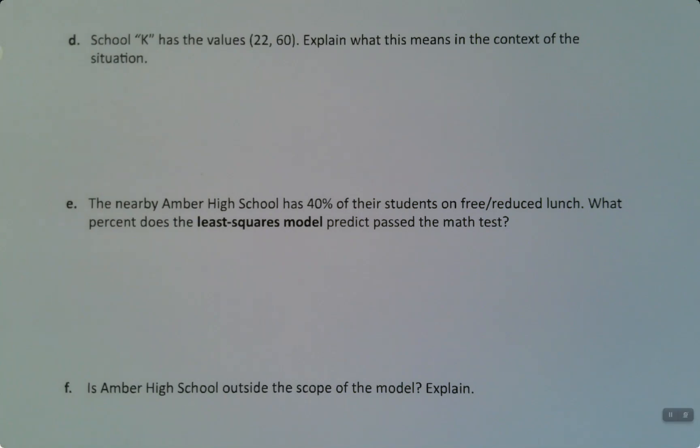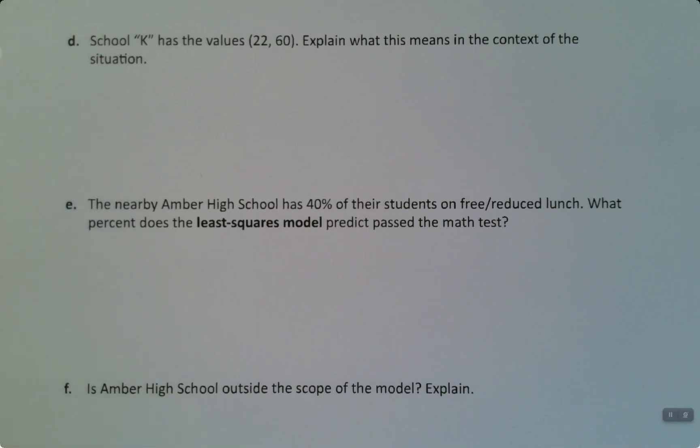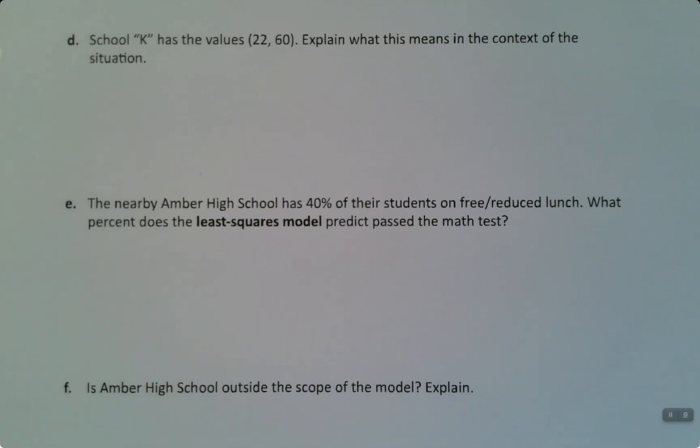So we want to continue with our example of the free reduced lunch and the passing math exams. Now I've added in a question here at the top of this page. If you're watching this in spring 2023, you can probably fit this at the bottom of the page instead. This will be here in these notes from this point on. Alright, so school K has the values 22, 60. Explain what this means in the context of the situation.